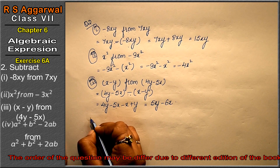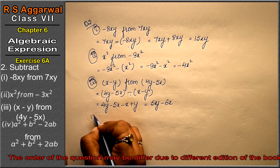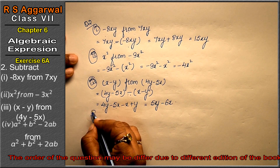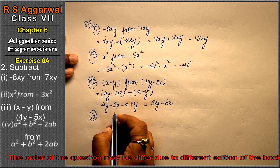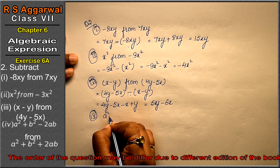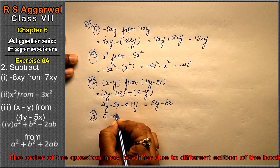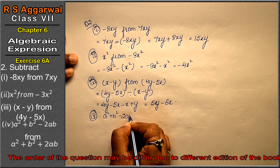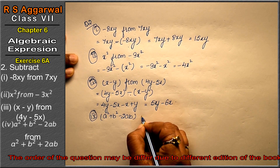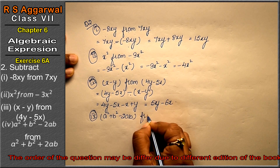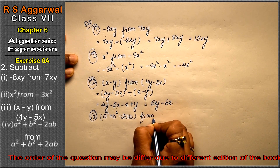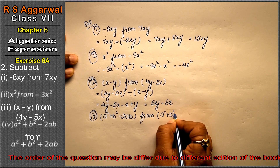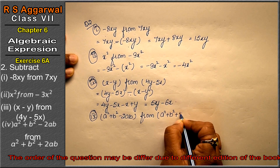Let's do the fourth part. Subtract (a² + b² - 2ab) from (a² + b² + 2ab). The digit after 'from' is a² + b² + 2ab.